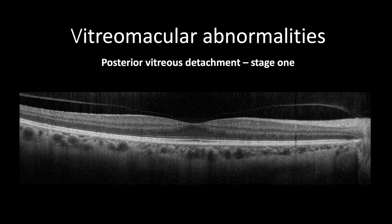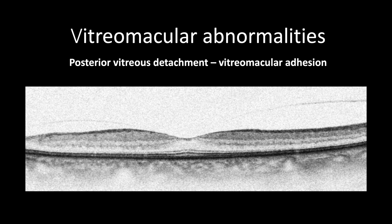When the posterior cortical vitreous separates from the posterior pole, it happens in stages. In stage 1, there would still be a posterior cortical vitreous adhesion at the center of the fovea, while the posterior cortical vitreous is separated perifoveally. However, this stage shouldn't be mistaken with vitreomacular traction, as in vitreomacular adhesion there won't be disruption of the ellipsoid zone or inner retinal tissues, and it is asymptomatic.